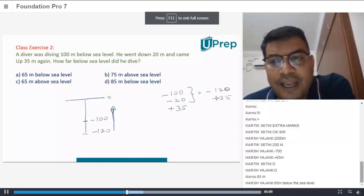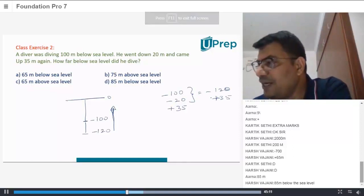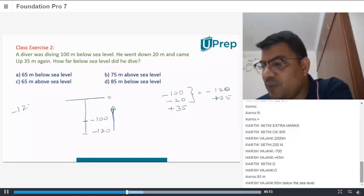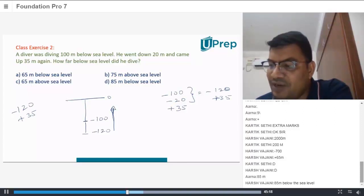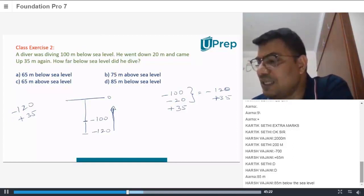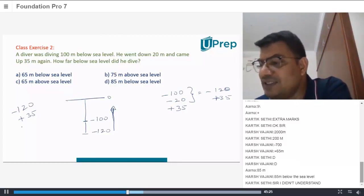So you have minus 120 and plus 35. Whenever you have difference of sign what do you do? You actually subtract the numbers: 120 minus 35.